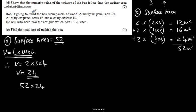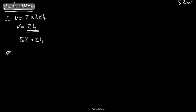We're now told Rob is going to build the box from panels of wood. A 4 by 3 meter panel costs £4. A 4 by 2 meter panel costs £3. And a 3 by 2 meter panel costs £2. He will also need two tubs of glue, which costs £1.20 each. In part E, for four marks, we need to find the total cost of making the box. So let's set this up. Let's start now with the panels. So what we'll do is set this up, and we will start with the panels. We are going to need now two lots of each of these.